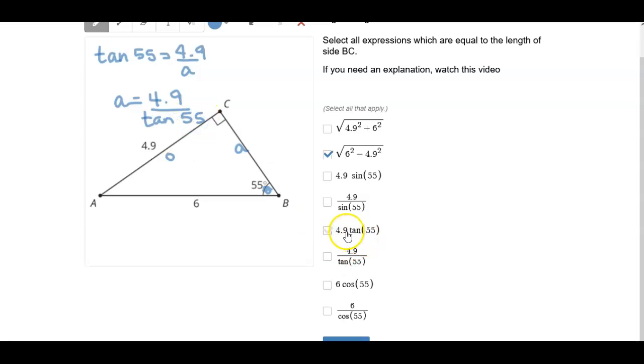So it can't be 4.9 times the tangent of 55 and 4.9 divided by the tangent of 55. So we have to make sure that we pick the correct one, which is this one.